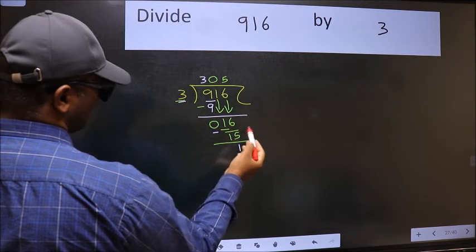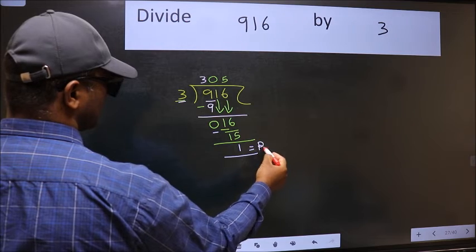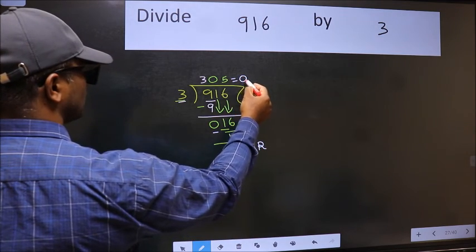No more numbers to bring it down. So we stop here. This is our remainder and this is our quotient.